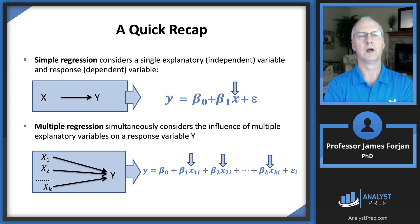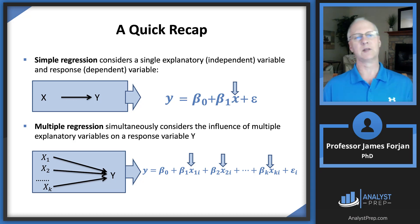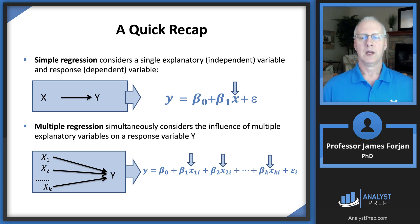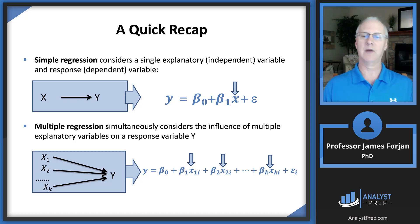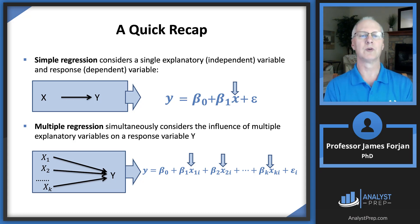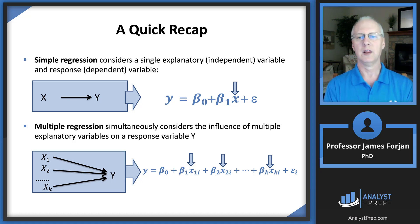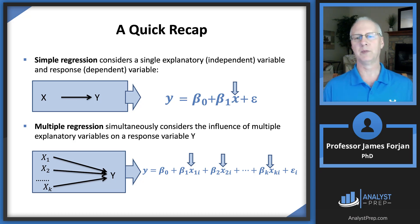Quick recap: a simple linear regression model has an x variable — the independent explanatory variable — that tries to explain the dependent y variable, with the formula shown. The idea is that x does a good job explaining y. For example, we might try to determine performance on a German test, where the y variable is test performance and the x variable is the number of hours studied. The simple linear regression model summarizes the relationship between those two variables.